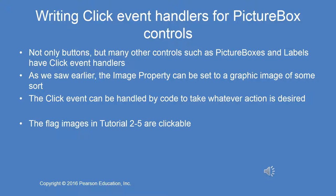Buttons are not the only controls that have click event handlers. Picture boxes and labels are some other controls that have click event handlers — in other words you can click on a picture box or click on a label. The image property can be set to a graphic image, and the click event can be handled by code to take whatever action is desired. The flag images in tutorial 2-5 are clickable. I'm going to make sure you've read chapter two to completion and finished the flag project tutorial before we go on — if you haven't, pause this and finish the tutorial, because everything from this point on will make much more sense.